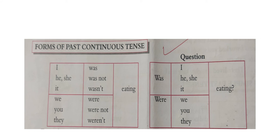Past continuous tense is used to express an action going on at some time in the past. From the given table, you can learn to frame sentences in the affirmative, negative, and interrogative. For example: 'Mr. Mehta was eating his lunch when the bell rang' — affirmative in past continuous tense.